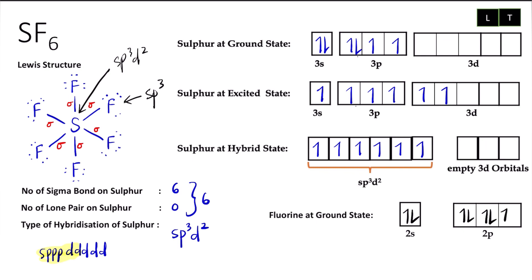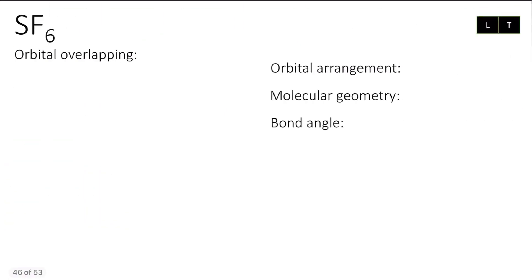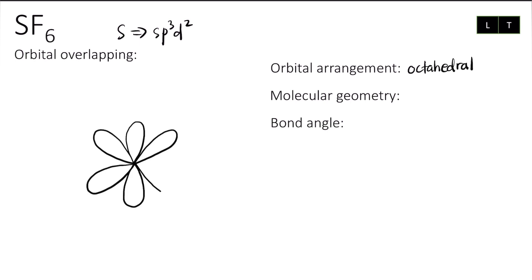Next, we are going to draw the orbital overlapping. Sulfur has sp3d2 — 6 of them — which will adopt the basic shape of octahedral. So the orbital arrangement will be octahedral. Then show the orbital overlapping end to end with the 2p orbital for fluorine.